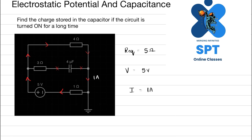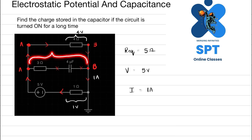Since 1 ampere is flowing through the external path, the voltage across the 1 ohm resistor will be 1 volt, and the voltage across the 4 ohm resistor will be 4 volts. Now you can see that the 4 ohm resistor is connected exactly in parallel with the branch containing the 3 ohm resistor and 4 microfarad capacitor, so that same 4 volts will appear across that branch as well.